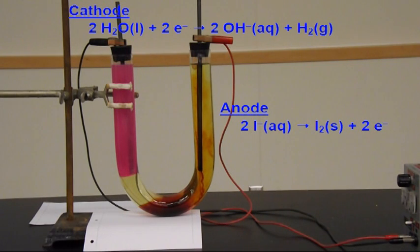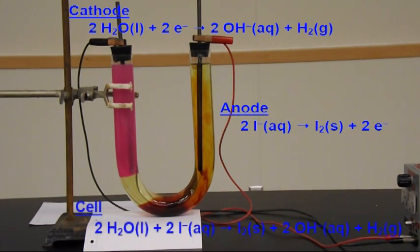The number of electrons are balanced. So electrons can cancel, that's the only thing that's going to cancel out of this. And we're left with two water plus I2 over there. Reacting to produce I2 solid plus two OH minus plus hydrogen. That's coming off as a gas. The cell potential should be something around negative 1.364 volts.